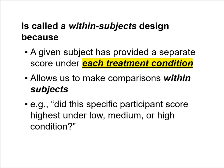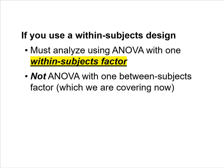We call it a within subjects research design because a given subject has provided a separate score under each treatment condition. This allows us to make comparisons within subjects — asking whether a specific participant scored highest under the low, medium, or high incentive condition. If you use a within subjects design, you must analyze your data using ANOVA with one within subjects factor, not the between subjects ANOVA we're covering now.